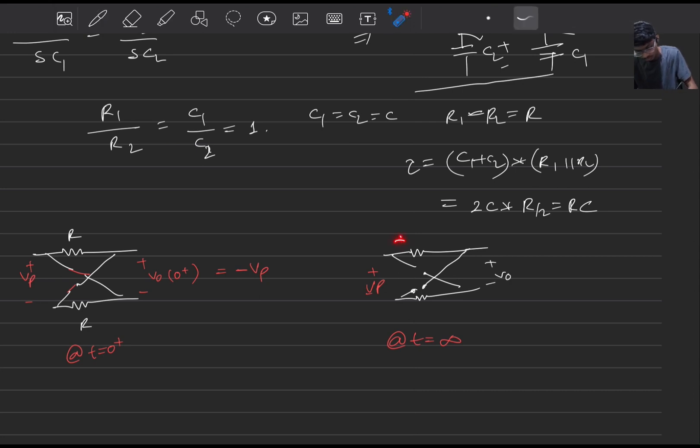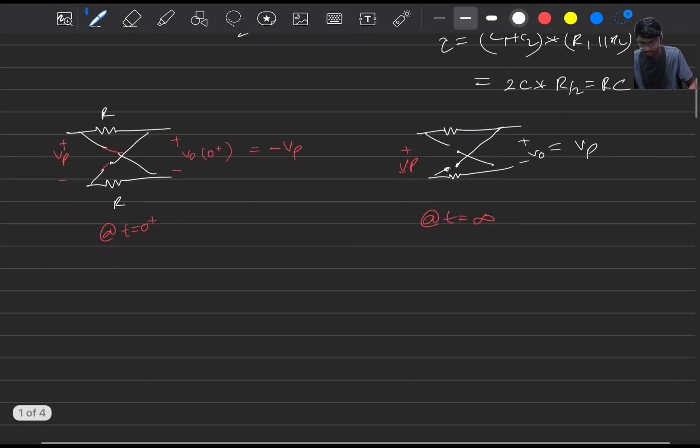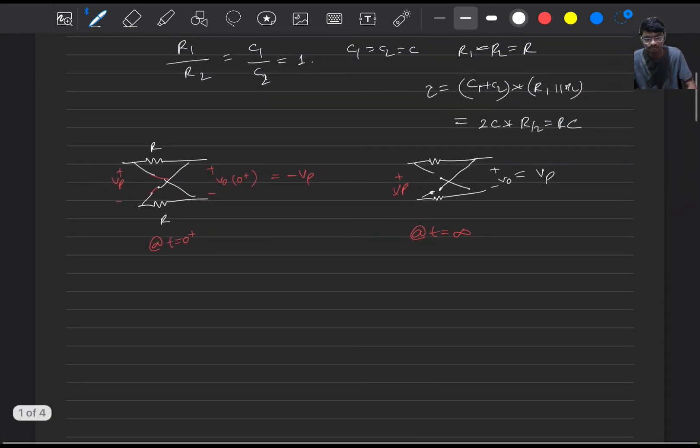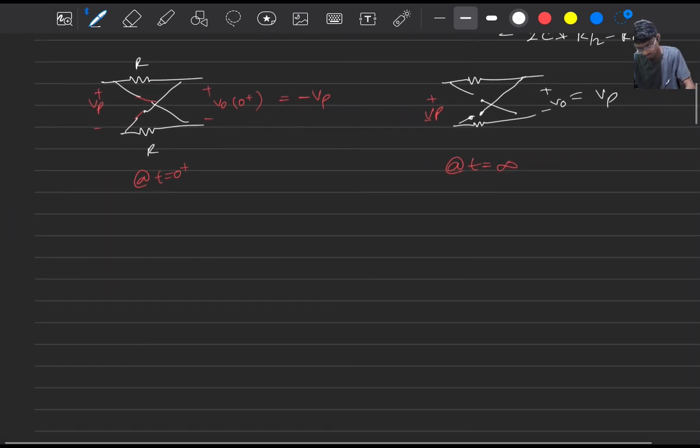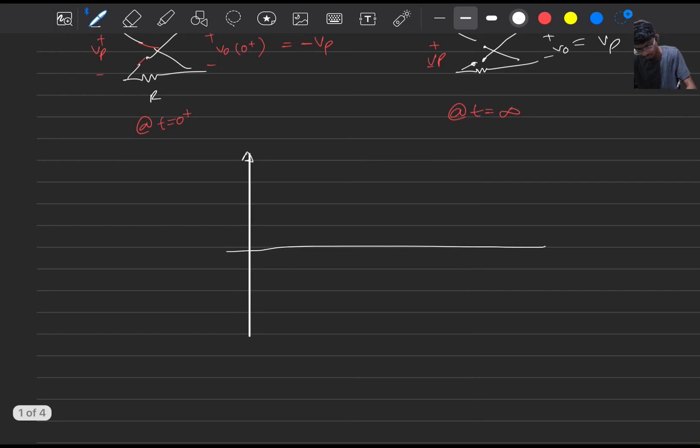And the drop through this will be zero volts and this V will come here and here, so V naught equals plus Vp at t equals infinity. Now we know the time constant, we know the initial and final conditions, we can easily plot the output voltage waveform. So the output voltage will go from minus Vp